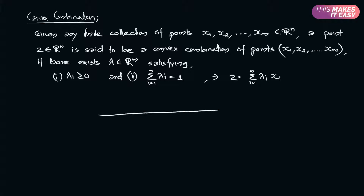For example, I am taking a line in one-dimensional real space. I have two points in this line: 1 and 5. If I scale up 1 and 5 with some lambdas such that all lambdas should be greater than or equal to 0 and the summation of lambdas should be equal to 1. In this case there are two points, so I am taking lambda 1 as half and lambda 2 as half.